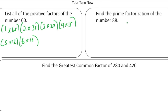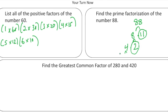The next one asks you to find the prime factorization of the number 88. So 88 we can write as 8 times 11. 11 is prime, so circle that. And 8 is 4 times 2 — 2 is prime. Then 4 is 2 and 2, and those are both prime. So multiplying 2 times 2 times 2 times 11 gives us 88, which we rewrite as 2³ times 11.